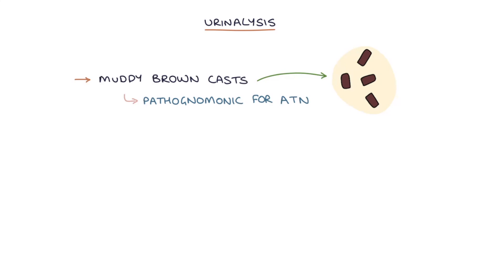So if you see this on urinalysis in your exams, you know what the diagnosis is. There can also be renal tubular epithelial cells that have broken away and passed into the urine.